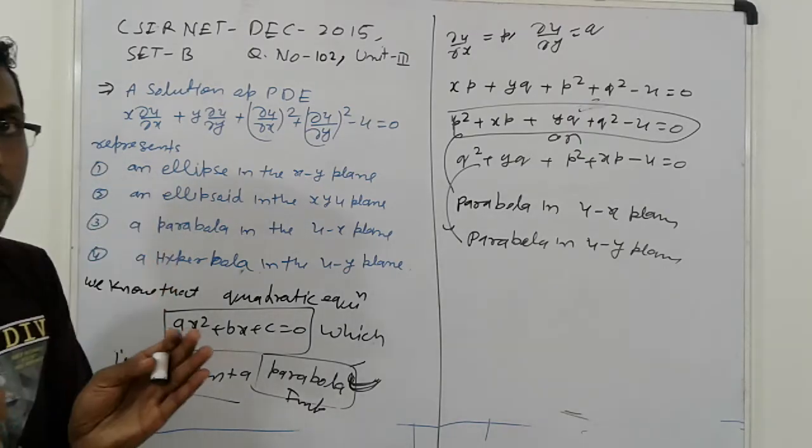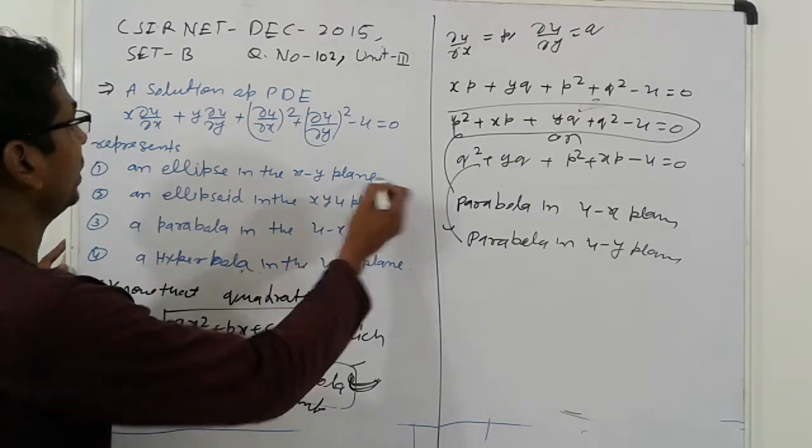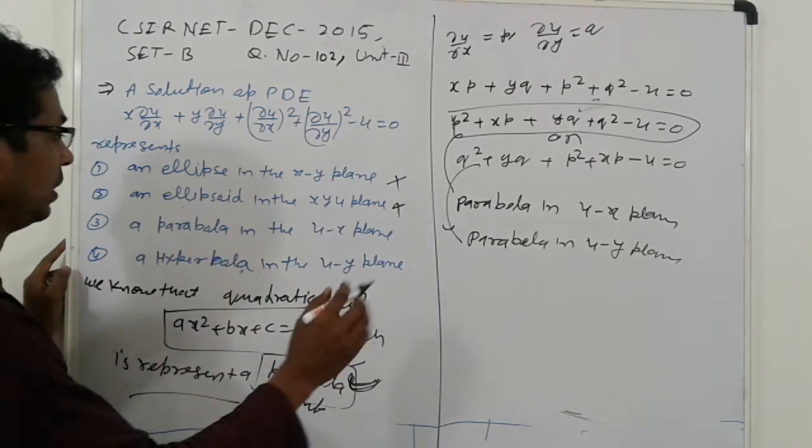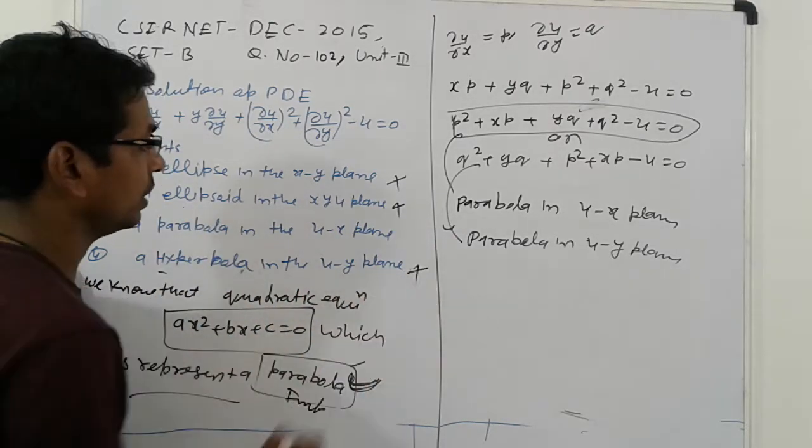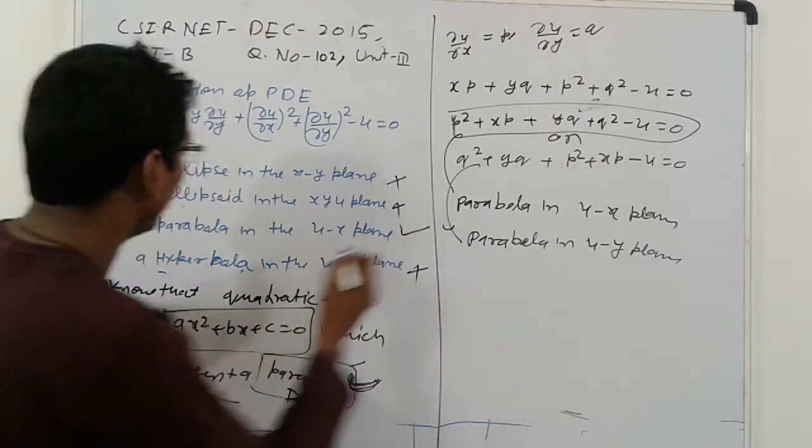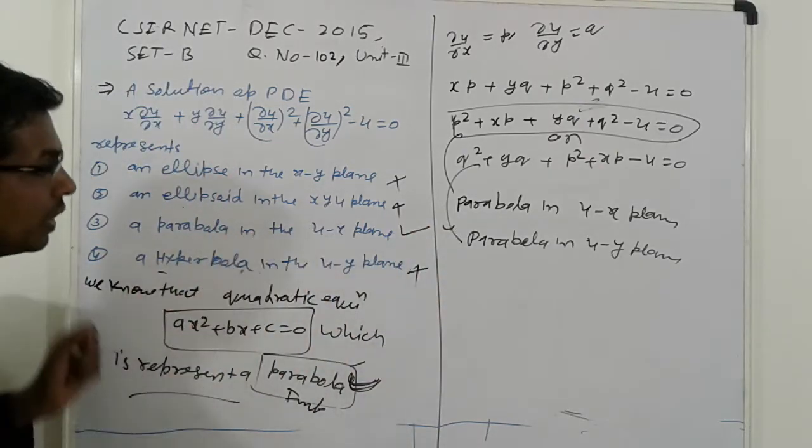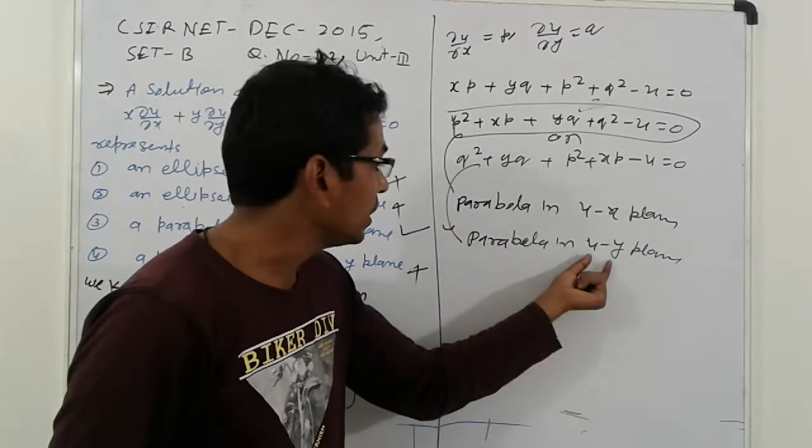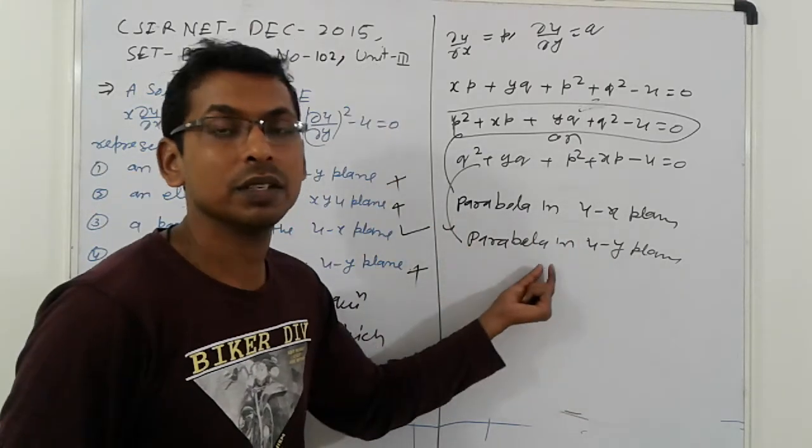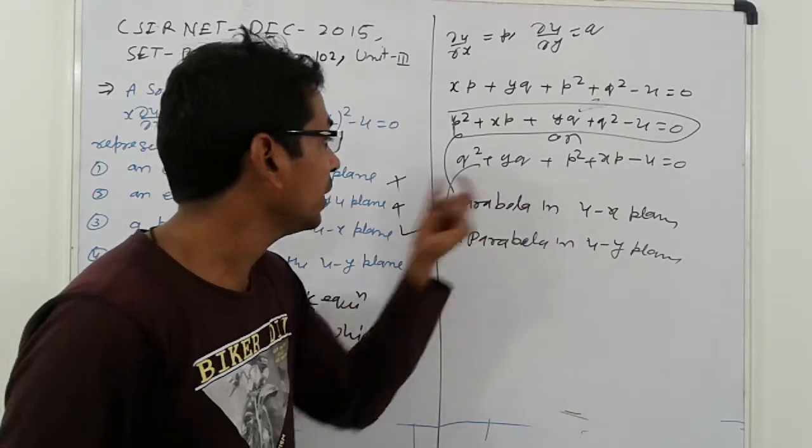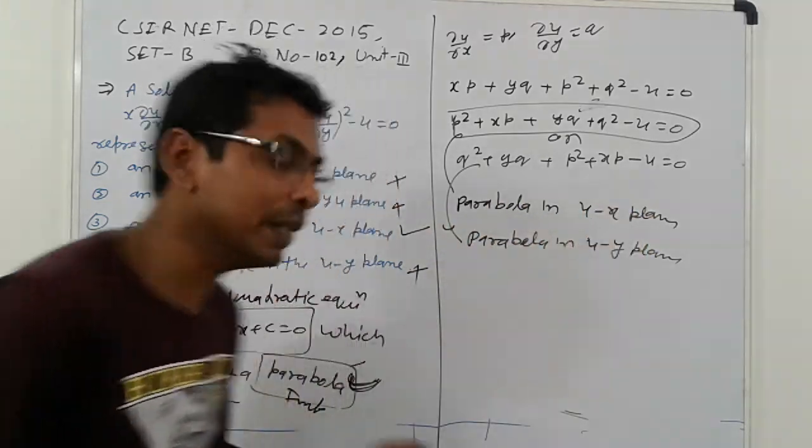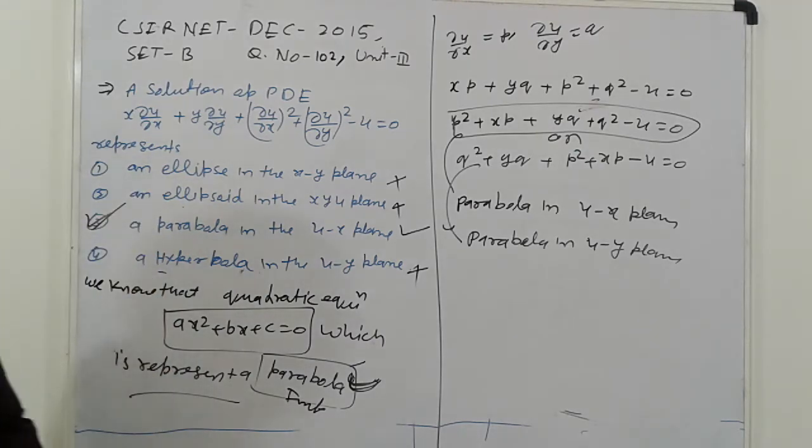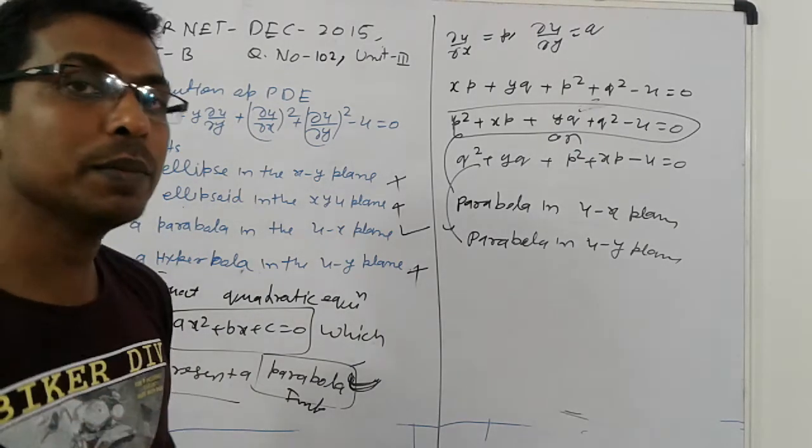So parabola. It means when they consider the parabola, ellipsoid is cancelled, ellipse is cancelled, and hyperbola is also cancelled. Only remaining the parabola. Here is the parabola in the u-x plane and parabola in u-y plane. But which option is not given, so it means do not use here. Only parabola in u-x plane. Here it means third option is correct.